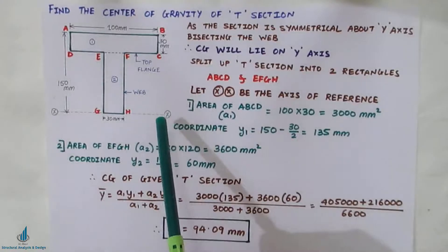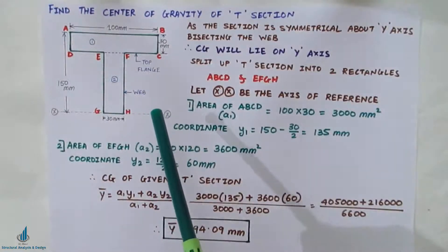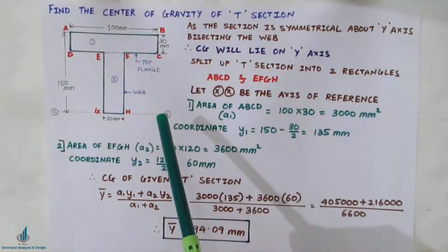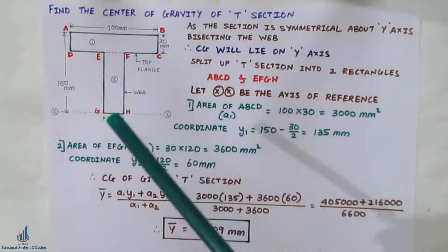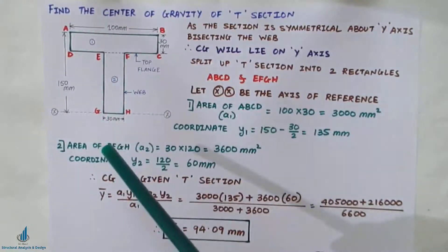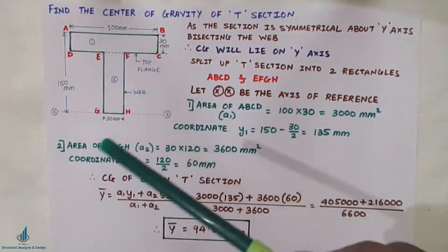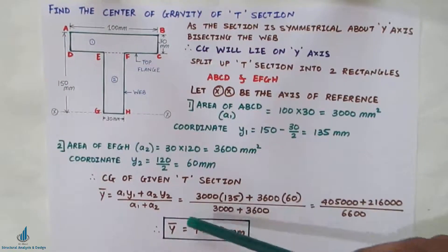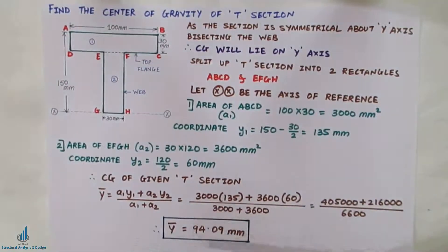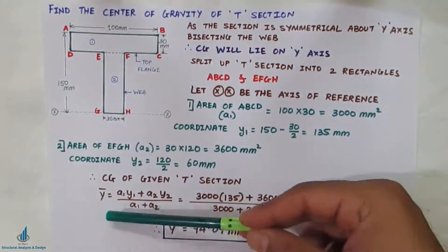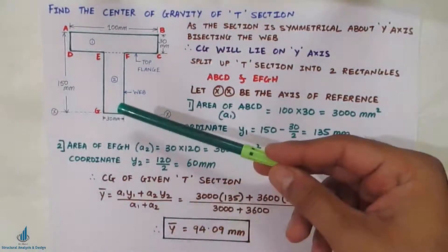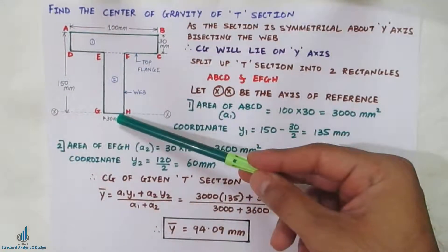The axis of reference is generally taken as the lowest line of the figure for calculating ȳ, and the left-hand side line of the figure for calculating x̄. x̄ and ȳ are nothing but the centroid or center of gravity. So if you are calculating ȳ, you take the lowest line of the figure.